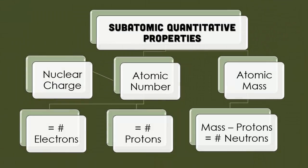So for subatomic quantitative properties, you have the nuclear charge, which is connected to the atomic number. And the atomic number can represent the number of electrons and the number of protons. The atomic mass is equal to the number of protons and the number of neutrons. So if you take the mass and you subtract the protons from it, you'll get the number of neutrons. That's a very important formula that you guys should probably write somewhere next to your periodic table.